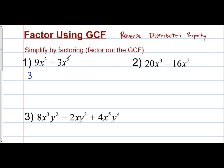What's the GCF of 9 and 3? The GCF of 9 and 3 is 3. What's the GCF of x cubed and x squared? x cubed means x times x times x. x squared means x times x. The most they have in common is two x's, so x squared is the GCF of x cubed and x squared. The variable with the smaller exponent is going to be the GCF for that variable, because in order to get x cubed, you already have to have x squared there.